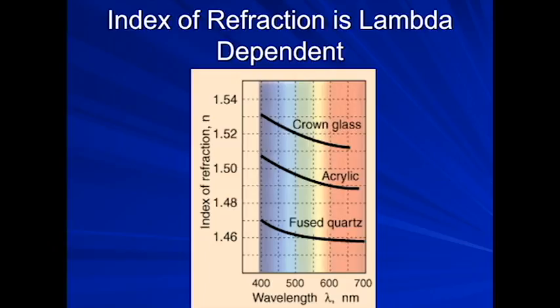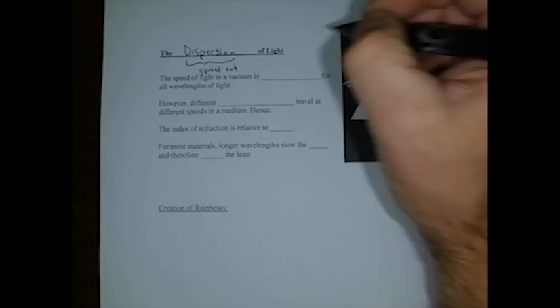Okay, so we have the dispersion of light. Dispersion, to disperse means to spread out. Spreading out of light. And this has to do with the speeds of the waves.